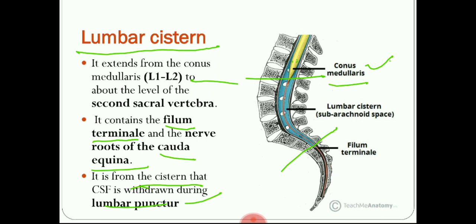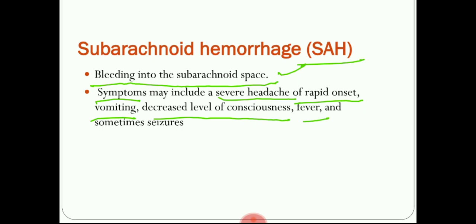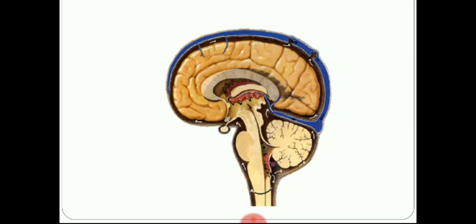Subarachnoid hemorrhage is a clinically important condition — bleeding into the subarachnoid space — either due to direct trauma or head injury, or due to pathological conditions such as hypertension, which can cause abnormal dilatation of blood vessels leading to an aneurysm. Rupture of this aneurysm causes bleeding. Patients present with severe headache of rapid onset, vomiting, decreased or loss of consciousness, fever, and sometimes seizures. The location, contents, and clinical importance of the different cisterns around the brain and brainstem should be remembered.